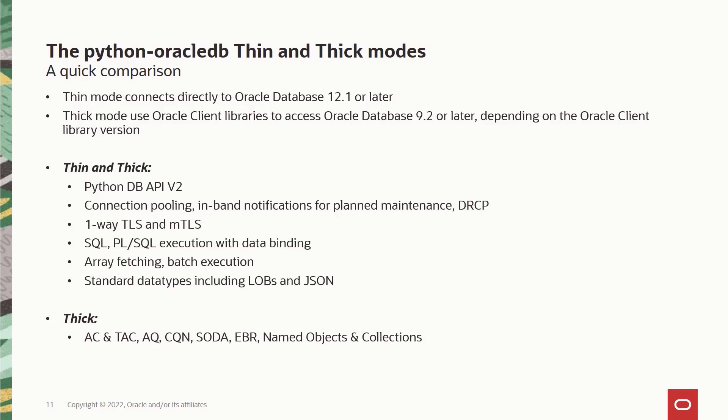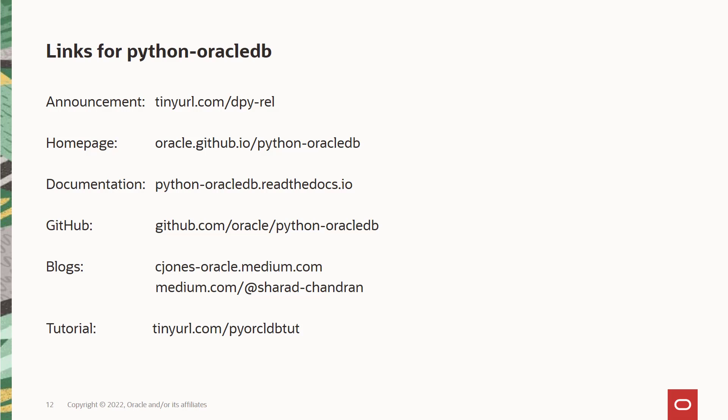Looking at some of the capabilities that are supported only in thick mode: you have the high availability or continuous availability features such as application continuity and transparent application continuity. The messaging features such as advanced queuing and continuous query notifications. SODA, which is the NoSQL style API for connecting to Oracle database, edition based redefinition for uninterrupted availability of Oracle based applications, and named objects and collections are all currently supported only in thick mode. However, we are planning to move these thick mode only features to the thin mode as well in subsequent releases of Python Oracle DB.